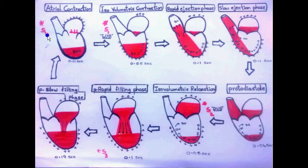S4 is produced just before S1. It is caused when there is a hypertrophied ventricle. Because of this, the atria have to contract forcefully in an effort to overcome the hypertrophied ventricle, and this results in production of the sound.